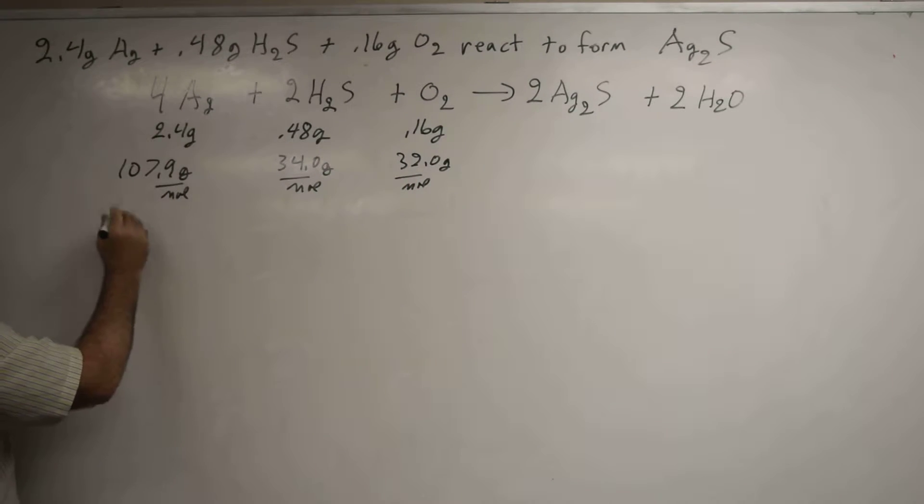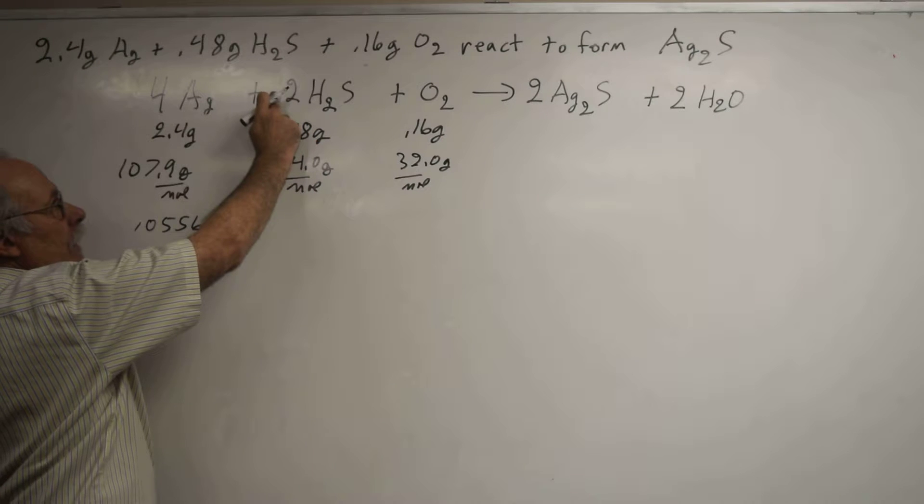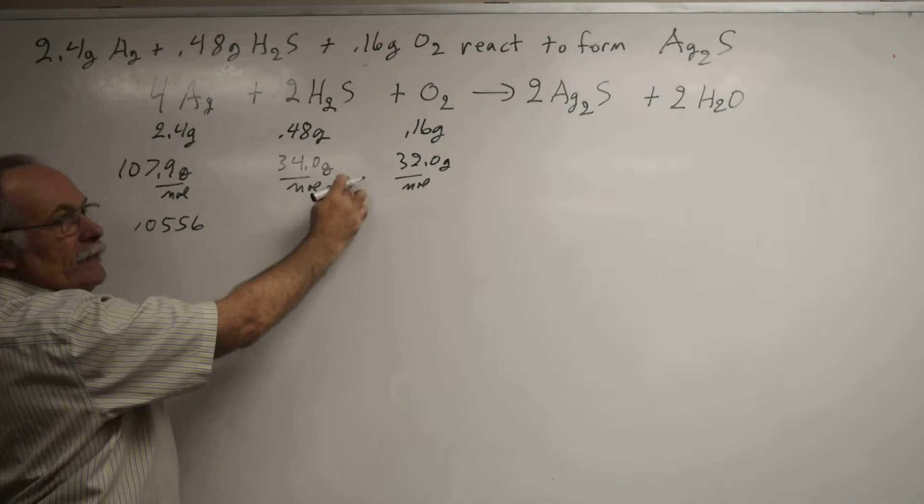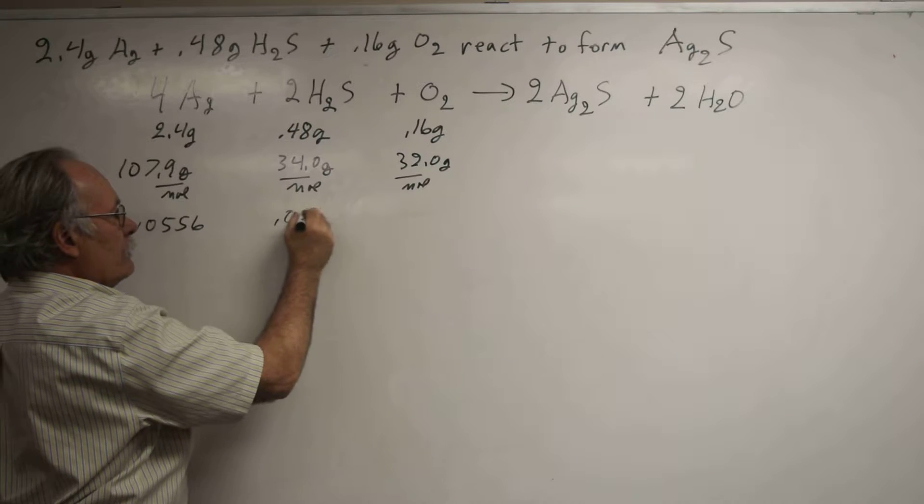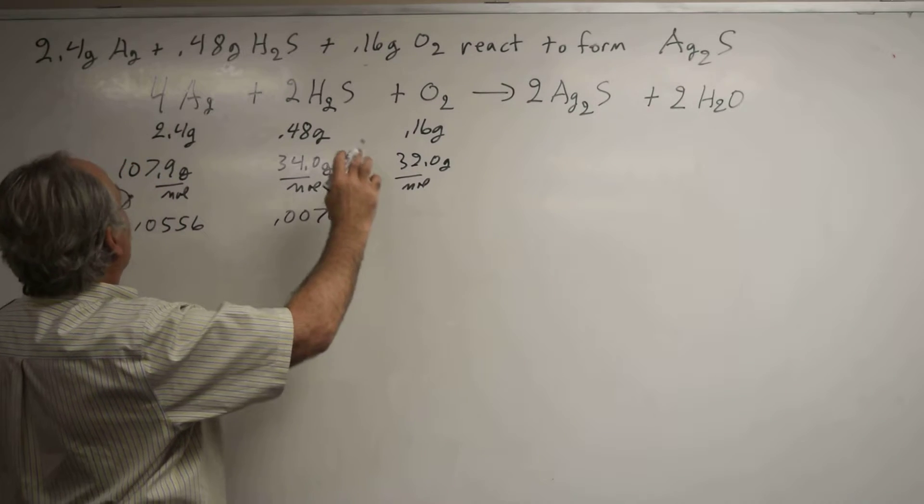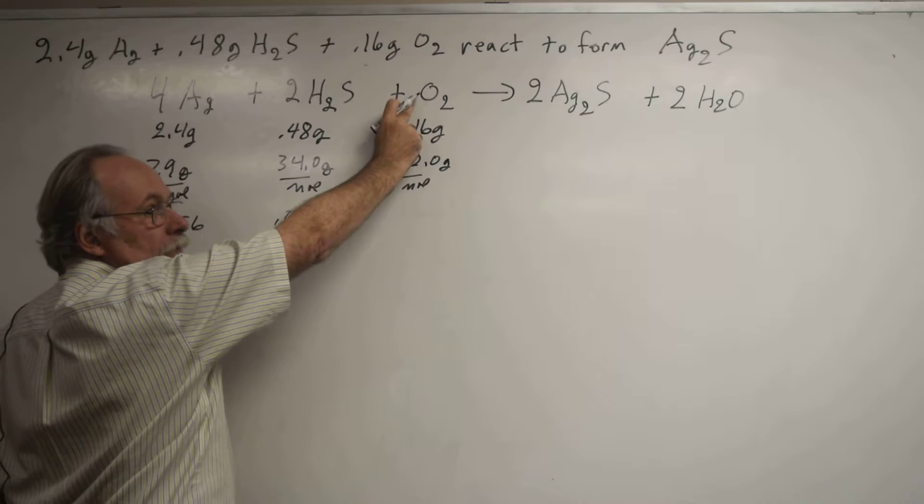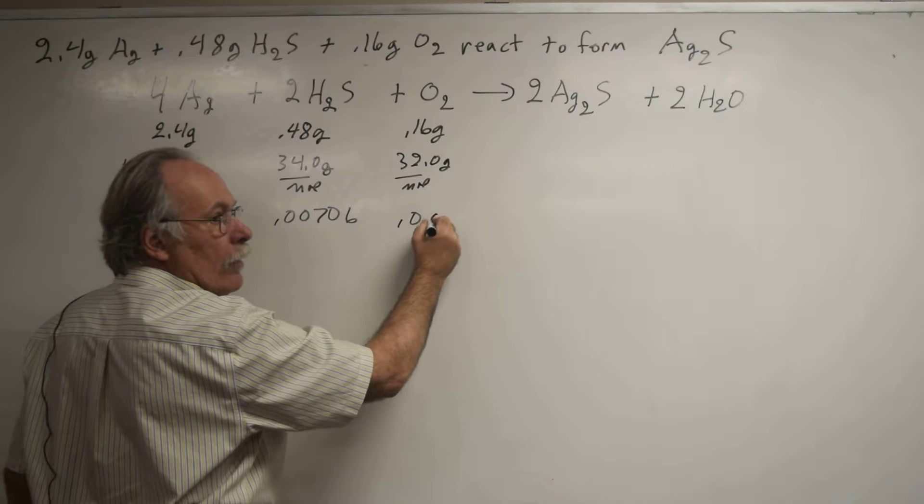I start with 2.4 grams of silver, divide by 107.9 grams per mole. That gives me 0.0224, and then divide that by 4, which gives me 0.0556. For H2S, I take 0.48 divided by 34 divided by 2, which is 0.00706. If I take the mass of O2, divide by its formula weight, divide by its coefficient of 1, I get 0.0050.